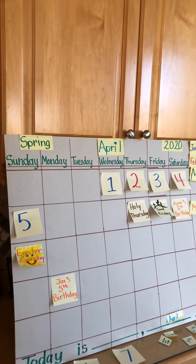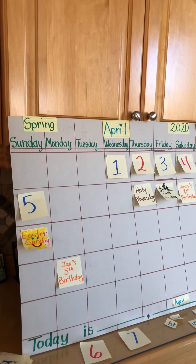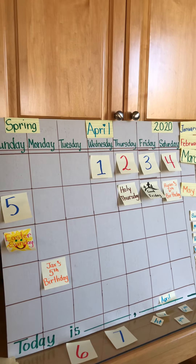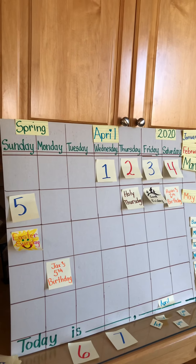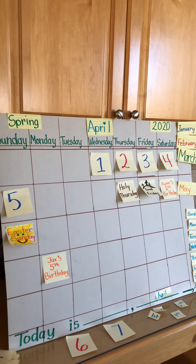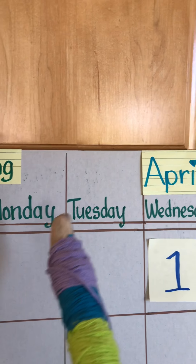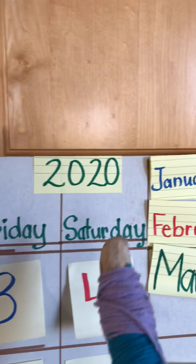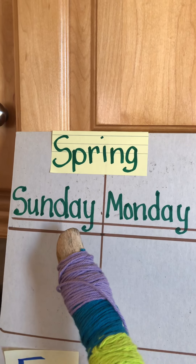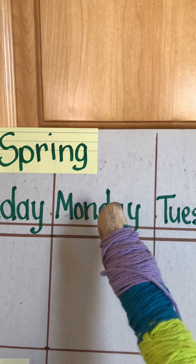Let me ask you — how many days are in a week? There are seven days, there are seven days, there are seven days in a week. Sunday, Monday, Tuesday, Wednesday, Thursday, Friday, Saturday. Is it Sunday? Is it Monday? Yes, it's Monday.